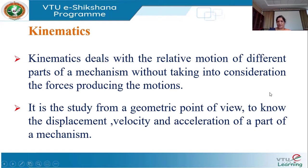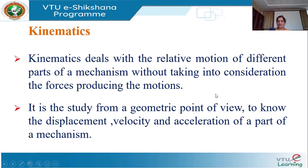In synthesis of mechanism, there are different types: type synthesis, number synthesis, and dimensional synthesis. In type synthesis, we select the particular mechanism for the application. In number synthesis, we determine how many links are in the particular mechanism. In dimensional synthesis, we determine the dimensions of the links — for example, in a four-bar mechanism, we find the lengths of the links and the input and output angles.